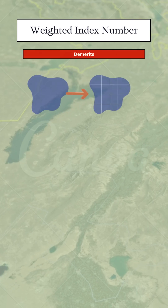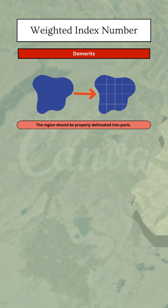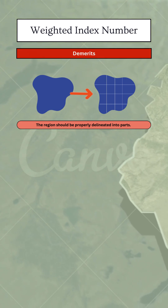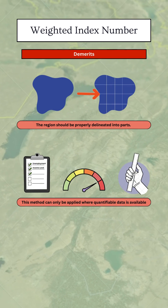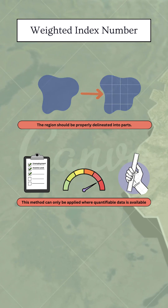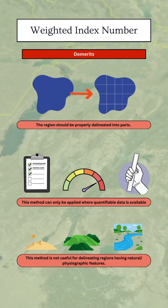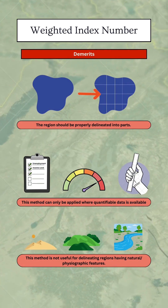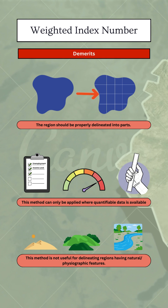Now let's discuss the demerits of this method. One, the region must have clearly defined parts. Two, this method can only be used where we have measurable data. Three, it doesn't work well for areas based on natural features, like hills or coastal regions, because we can't easily quantify them.